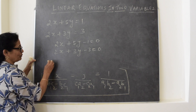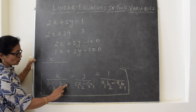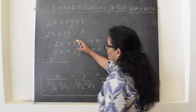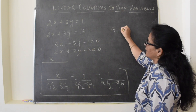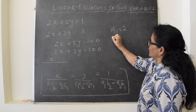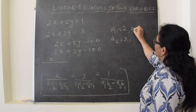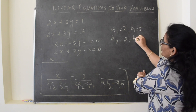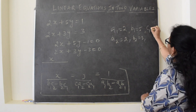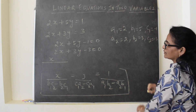Now, come to the rule. Write x upon... For convenience, we can write all coefficients: a1 is 2, a2 is 2, b1 is 5, b2 is 3, and c1 and c2 are minus 1 and minus 3.